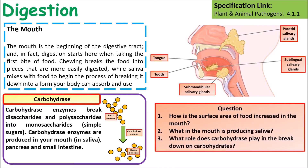The pH in the mouth is around pH 7, which is the optimum pH for amylase to work. Key questions: how is surface area increased? By chewing. What produces saliva? The salivary glands. What role does amylase play? It breaks down long carbohydrates like starch into smaller sugar molecules such as glucose.